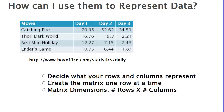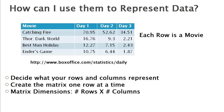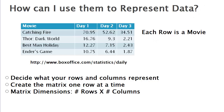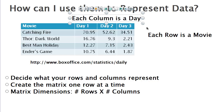Let's apply that to this example. Each row is a movie: Catching Fire, Thor Dark World, Best Man Holiday, and Ender's Game. So we let the rows represent each movie. Each column is a day — on day one, Thor Dark World had $16.76 million, Best Man Holiday had $12.27 million, and Ender's Game had $10.75 million on opening day. Days two and three are also columns.